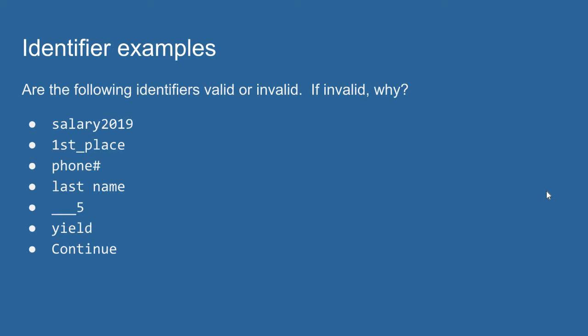Let's look at some examples here and discuss whether each of these identifier names are valid or invalid. We'll start with this first one, salary 2019. This is a valid identifier. It contains letters, numbers, and underscores. It contains valid characters and it doesn't start with a number. So this is a valid identifier.